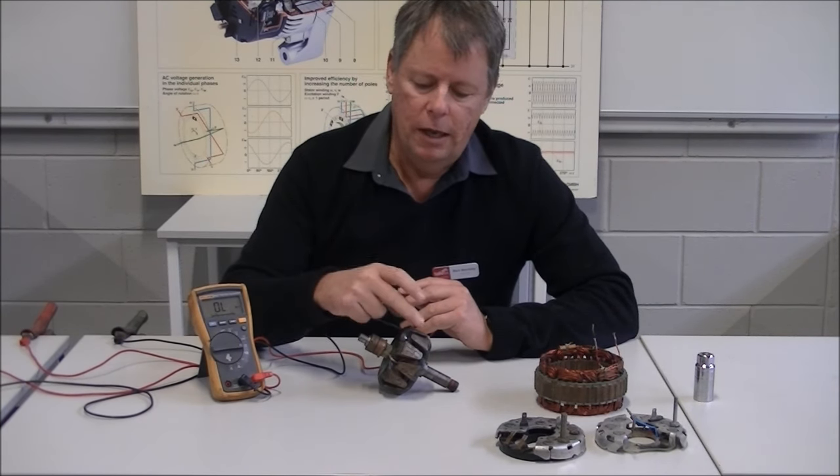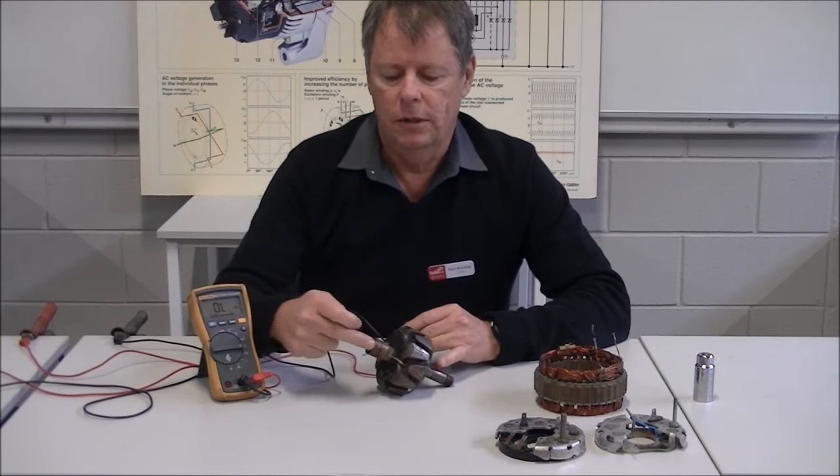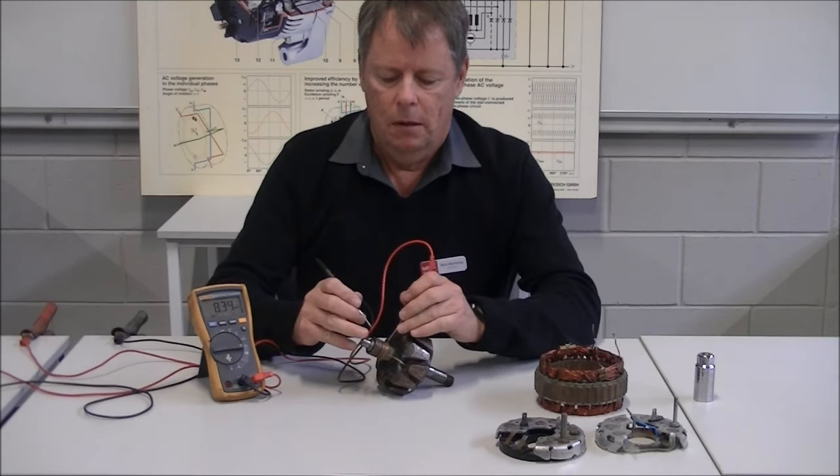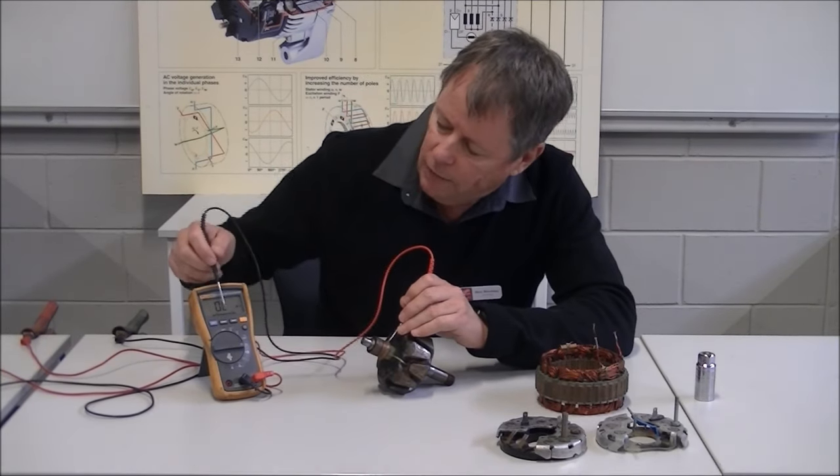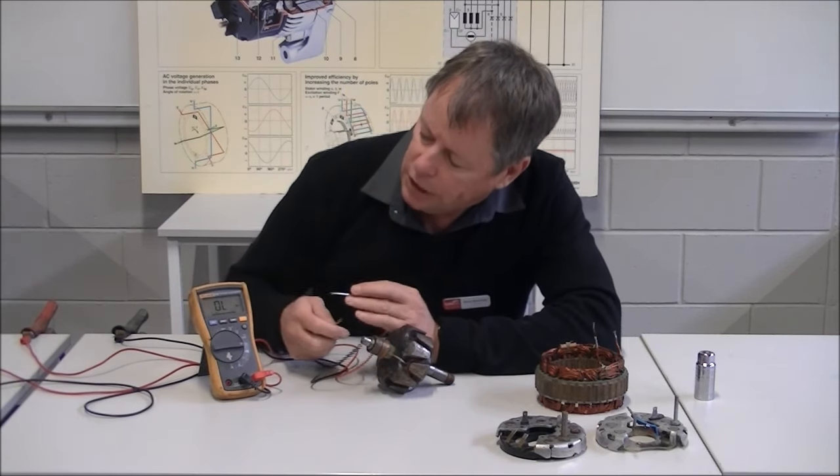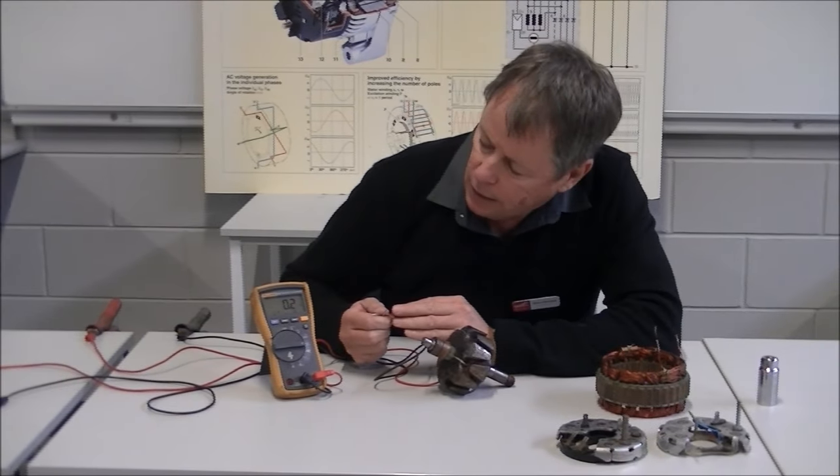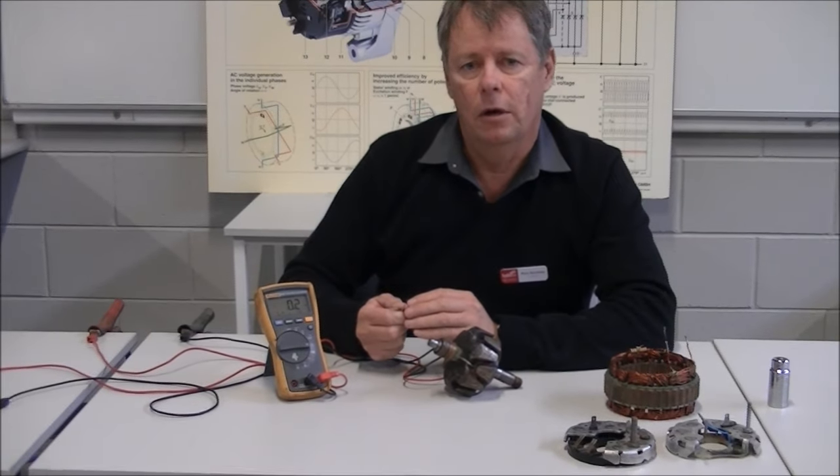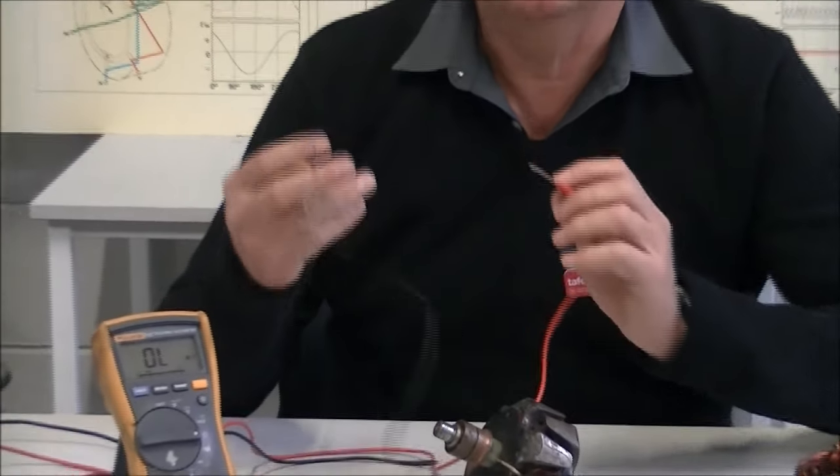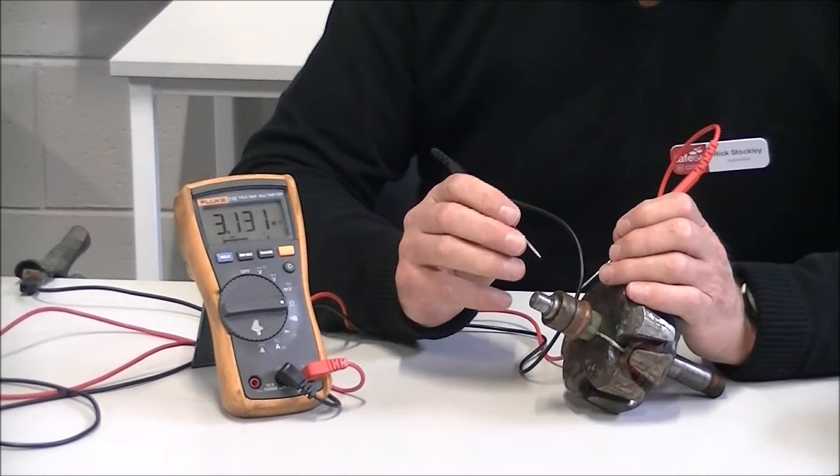We have a coil of wire here. The two ends of the coil come out and join to the slip ring. If we connect our ohmmeter up, we have a multimeter here set on ohms. We can check the multimeter is working by connecting the two leads together, and we should have close to zero ohms. There will always be some resistance in the leads and connections, as long as we're down to about 0.1 or 0.2 of an ohm.